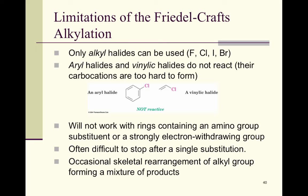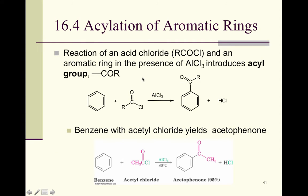Friedel-Crafts acylation of aromatic rings: this is also a Friedel-Crafts reaction. The reaction involves an acid chloride — please add acid chloride to your list of compound types. If we had a halide other than chloride it would be an acid halide. We have an acid chloride here, and just like in Friedel-Crafts alkylation, the attachment point is where the chlorine is. The chlorine is the leaving group, and the carbonyl group attaches to the benzene ring.